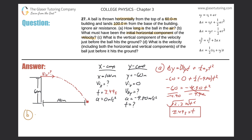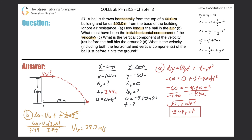For letter B: change in x equals initial velocity in x times time plus one-half times acceleration times time squared. Plugging in: 100 equals initial velocity times 3.49 — and since acceleration is zero, that term disappears. Dividing both sides by 3.49 gives an initial velocity in the x direction of 100 divided by 3.49, which equals 28.7 meters per second. That is the initial horizontal velocity. Part B was nice and easy.